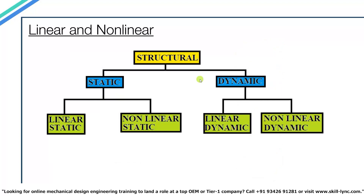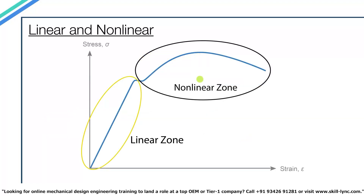Both static and dynamic analysis have two subtypes: linear and nonlinear analysis. An assumption is made that there is a linear relationship between stress and strain throughout the simulation. But once the material crosses the yield strength, its stiffness starts changing. To capture nonlinear effects the solver re-evaluates stiffness before each step. Linear analysis obeys Hooke's law — strain is proportional to stress — and deformations are relatively small. In nonlinear analysis there can be large deformations not proportional to the applied load.